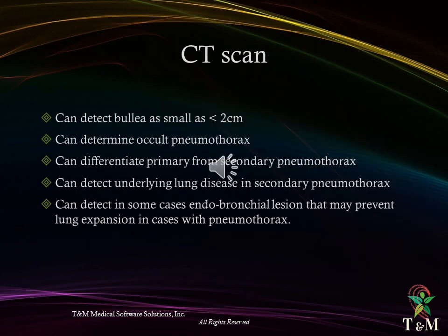CT scan, particularly high-resolution CT scan, can detect small bullae less than 2 centimeters, can determine occult pneumothorax, can differentiate primary from secondary pneumothorax, can detect underlying lung disease in secondary pneumothorax, and in some cases detects endobronchial lesions that may prevent lung expansion in cases with pneumothorax.